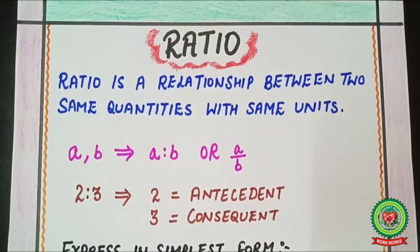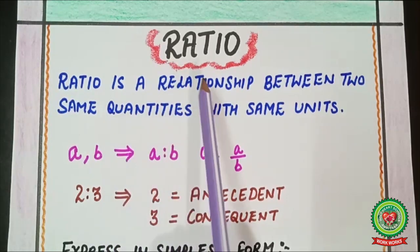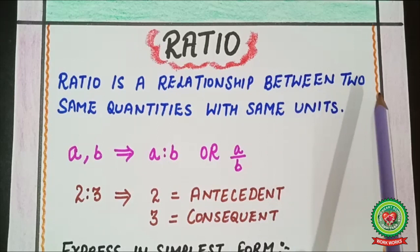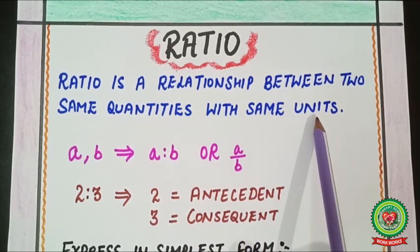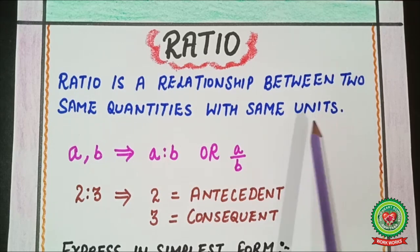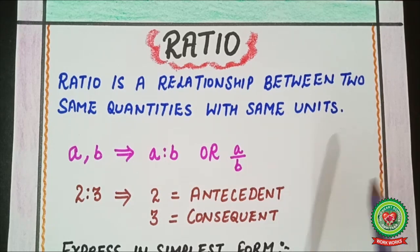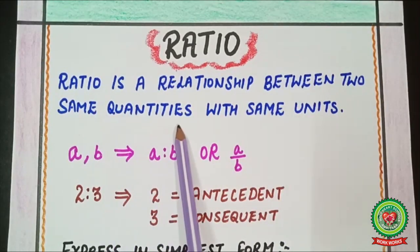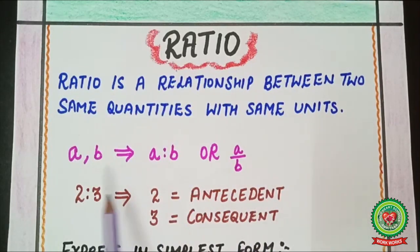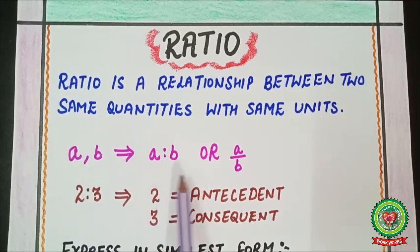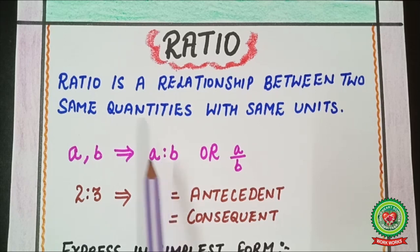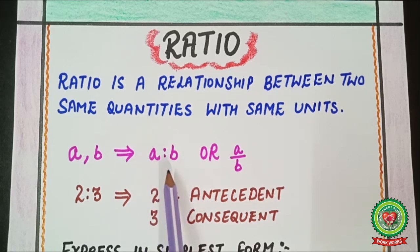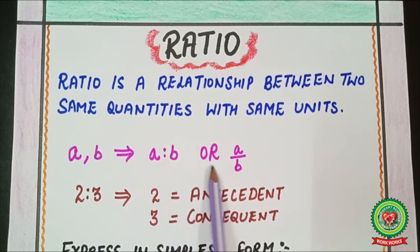First, we will talk about ratio, which we have already discussed in previous classes. A ratio is the relationship between two same quantities with the same units. Taking an example of a and b, we write it using the colon sign: a ratio b, or 'a is to b', or as a fraction.